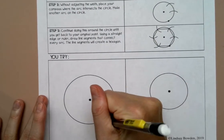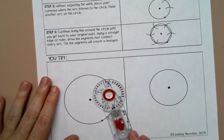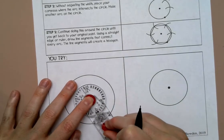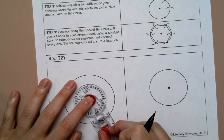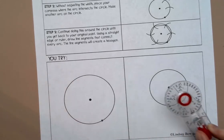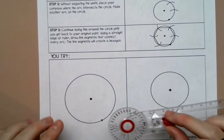All right, so I'm going to put a point. I'm going to measure from my center to that point, so I'm measuring the radius and lock. Then I'm going to put my compass on the point that I drew.